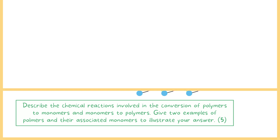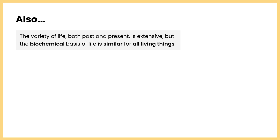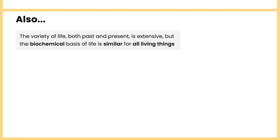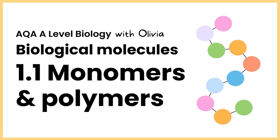Before finishing this topic, one more point from the specification worth mentioning: the variety of life both past and present is extensive, but the biochemical basis of life is similar for all living things. That is everything for monomers and polymers — next up will be carbohydrates.